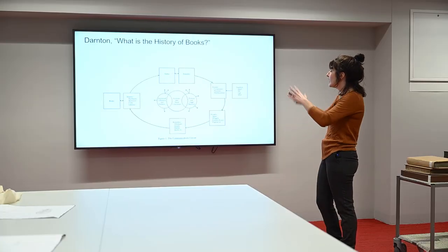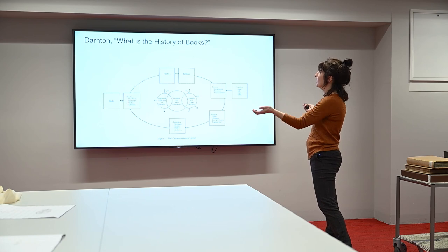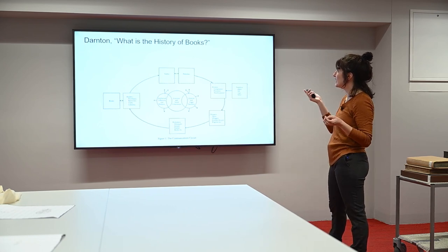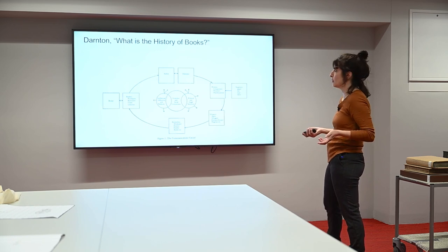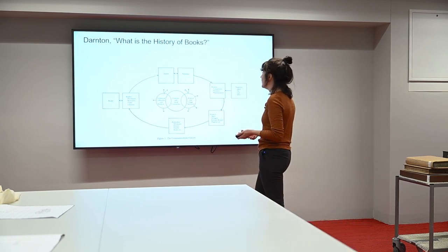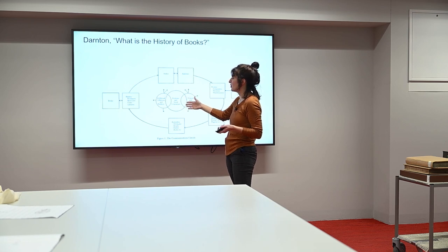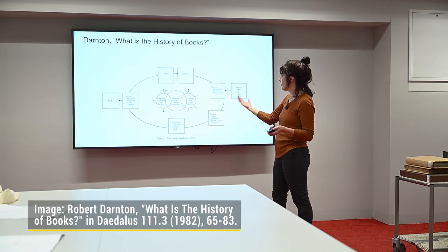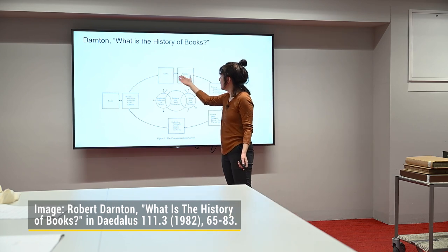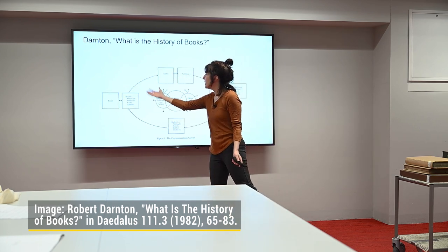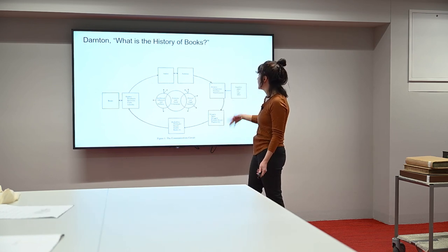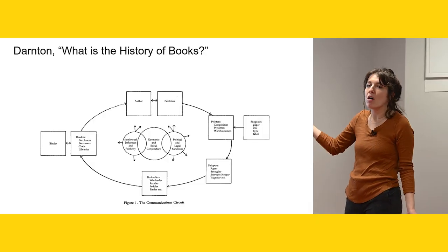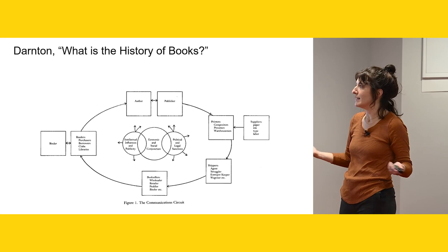I really like this chart. This is Robert Darnton's from his article 'What Is the History of Books?' He's reconceptualizing the process of printing books through the lens of social history. In the center he has 'economic and social conjunctures' — what is driving the desire to print a text. The author and publisher are up here, and then you have all these other people contributing in a cyclical way to book production. I just like this image as an example of all the different hands involved in the production of a text.